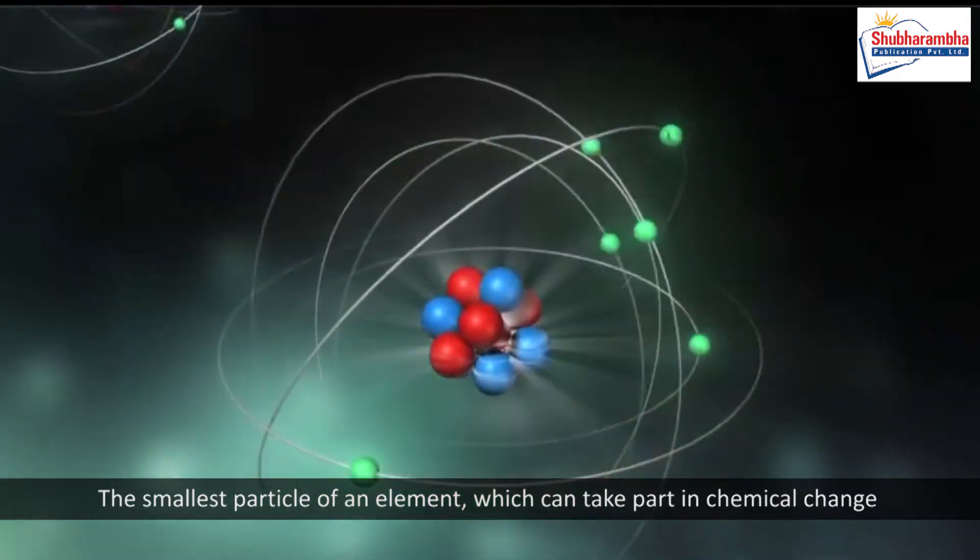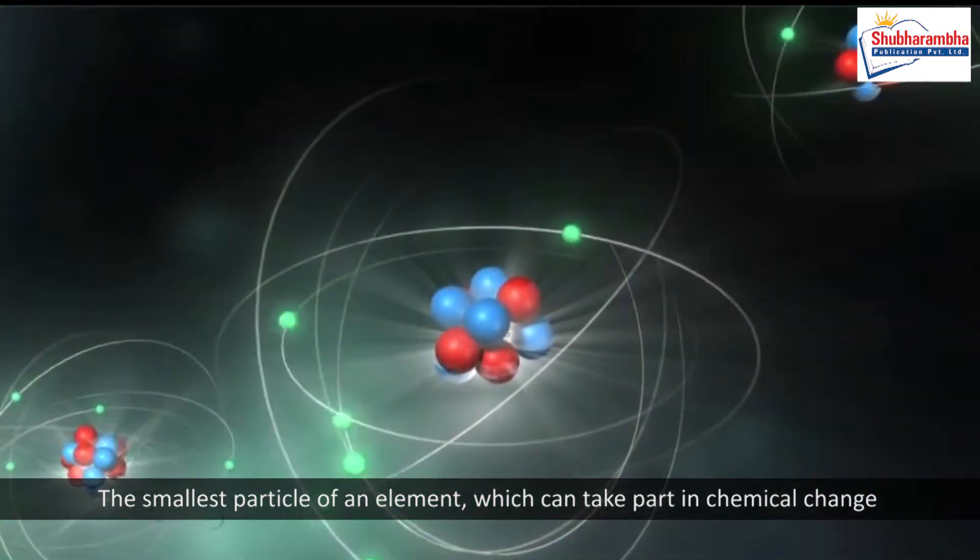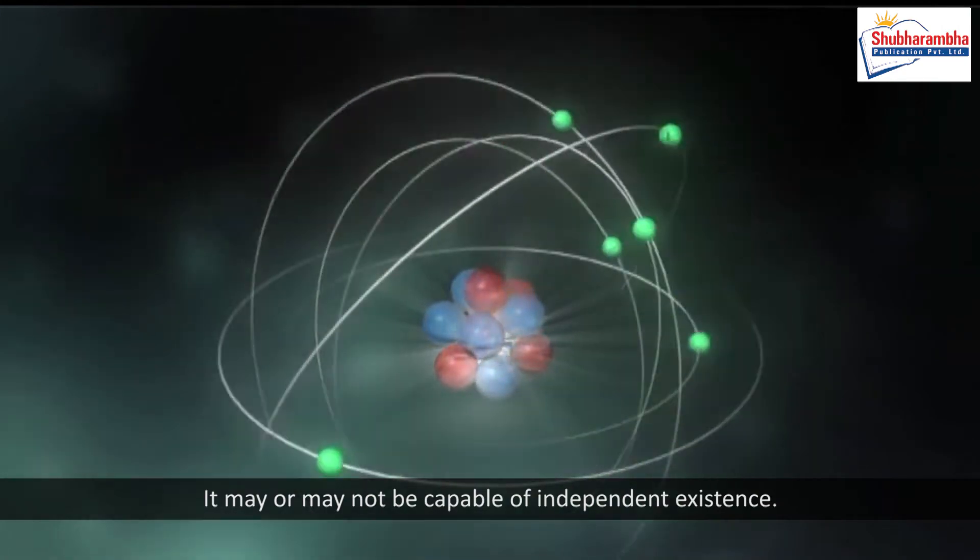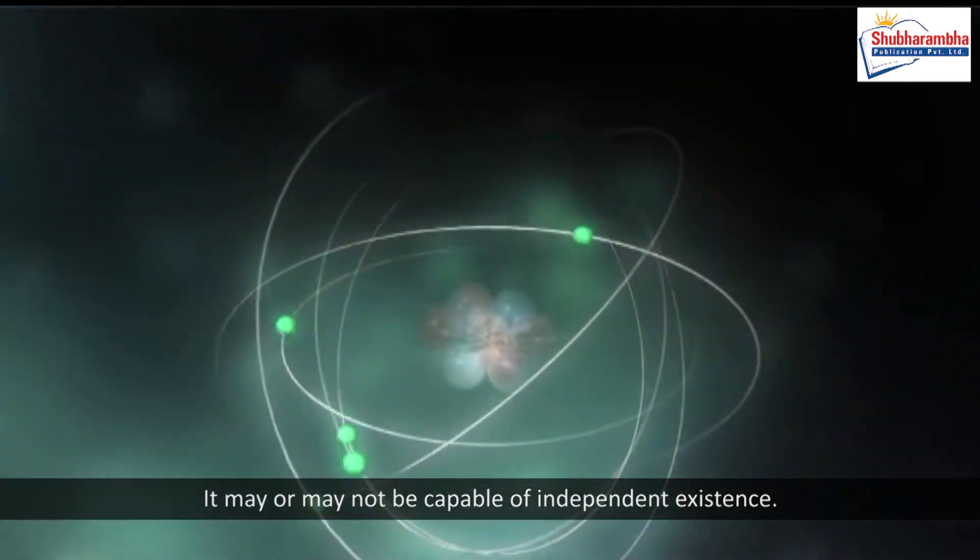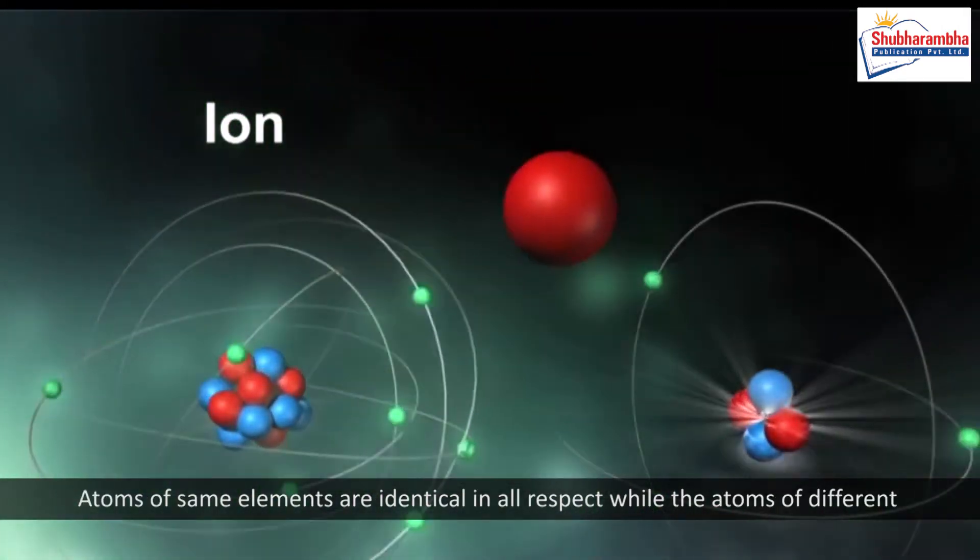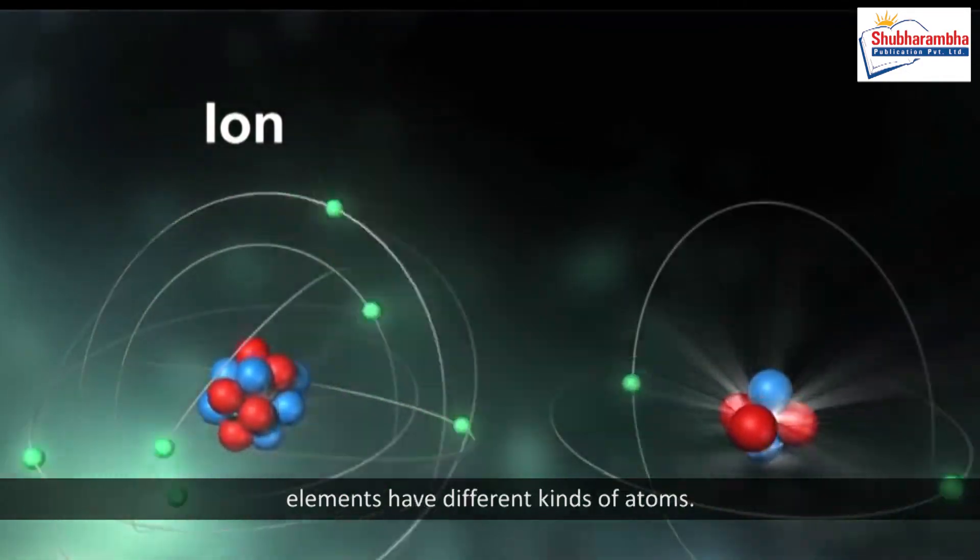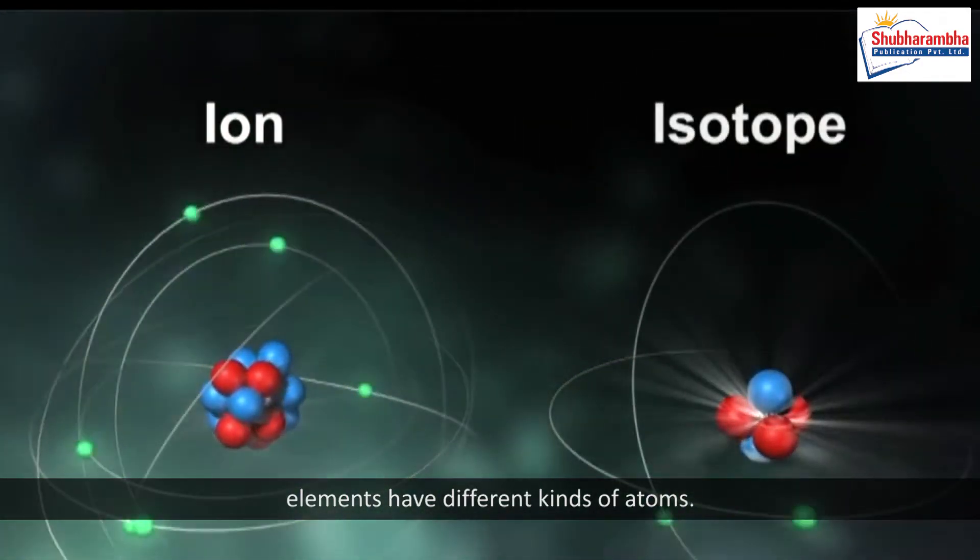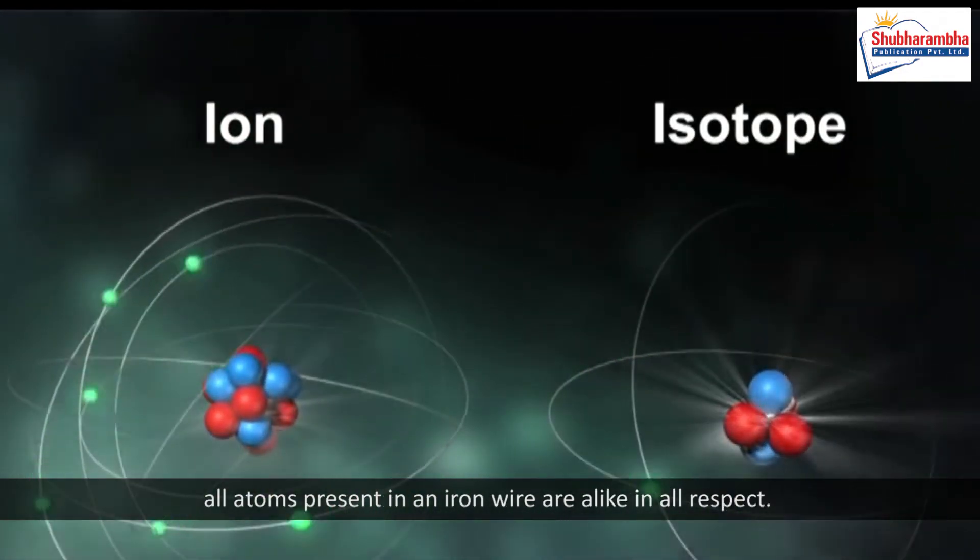Atom. The smallest particle of an element which can take part in chemical change is called an atom. It may or may not be capable of independent existence. Atoms of same elements are identical in all respects, while the atoms of different elements have different kinds of atoms. All atoms present in an iron wire are alike in all respects.